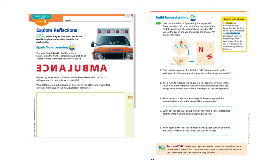Let's look at A. Find two line segments for the letter N that are parallel in the pre-image. So here's your pre-image and here's your image. Are the corresponding segments in the image also parallel? For example, if you pick this line and this line segment, the corresponding line segment for this one is here. That's one thing about reflection. You have to make sure that you have the same line in the image as you are talking about in the pre-image. So are they also parallel?